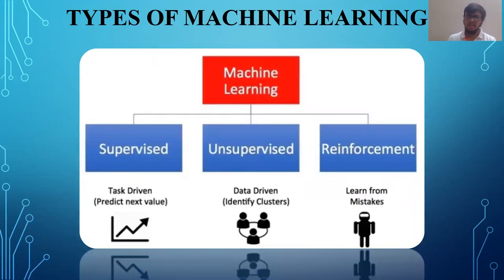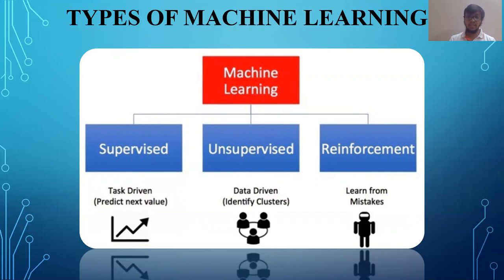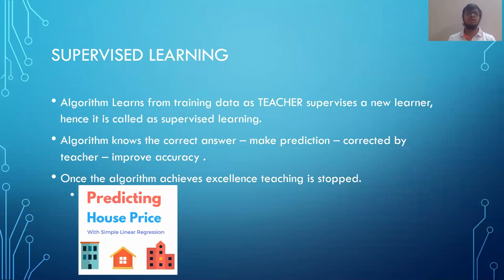In machine learning there are basically three types — three ways to teach a machine: supervised, unsupervised, and reinforcement. Supervised is like a kid going to school where a teacher supervises a new learner. In supervised learning the kid has a teacher or supervisor. If a student does something wrong, the teacher corrects them. Similarly, in machine learning the label acts as the teacher — the label corrects the machine learning algorithm.